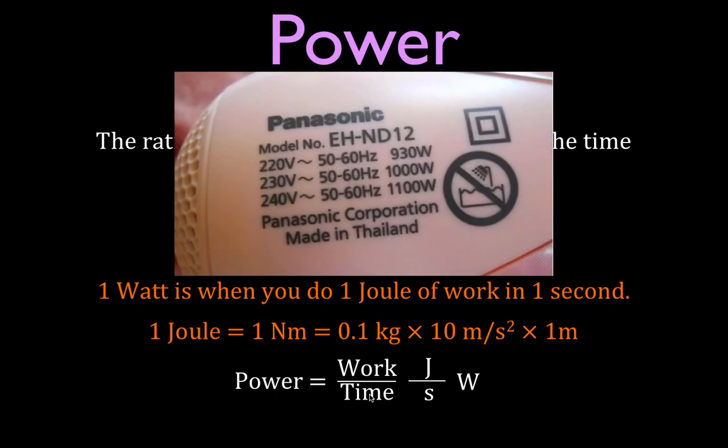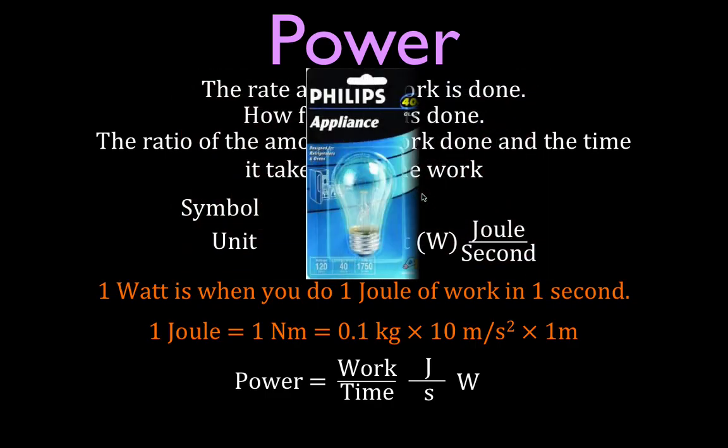You've probably heard the term watt used a lot. Maybe with an appliance like this hairdryer. It has three settings: 930 watts, 1,000 watts, and 1,100 watts. What does that mean? That means at this highest power setting, this hairdryer is going to convert 1,100 joules of electric potential energy into heat or into the motor to drive that hairdryer. 1,100 joules of work per second is 1,100 watts. Also, you've probably heard watts with respect to light bulbs. This is a 40-watt light bulb. That means that this light bulb converts 40 joules of electric potential energy into light every second. The higher the wattage, the more energy is converted, and the brighter the bulb is going to be.